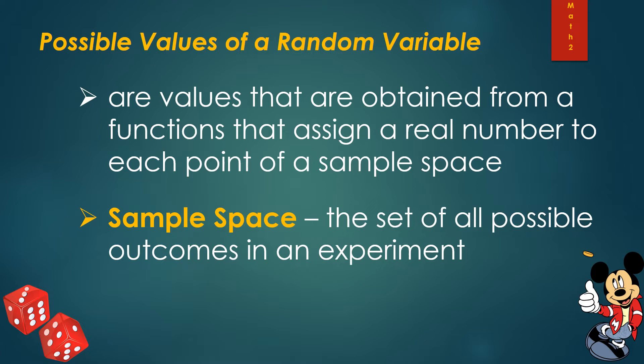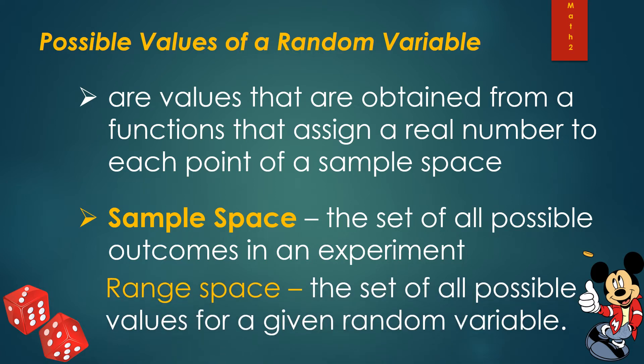We will be talking about the following terms. The sample space is the set of all possible outcomes in an experiment. The range space is the set of all possible values for a given random variable. Do not interchange the two — sample space contains all possible outcomes, while range space contains all values of that particular random variable, and that will be based on the sample space.